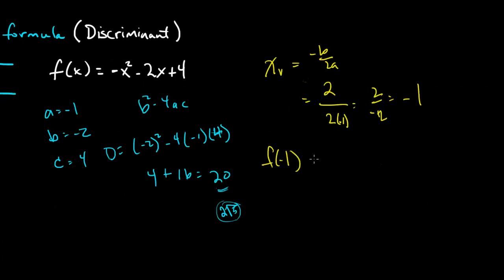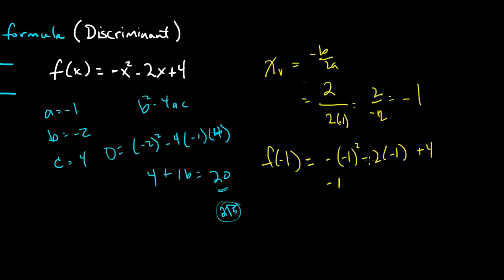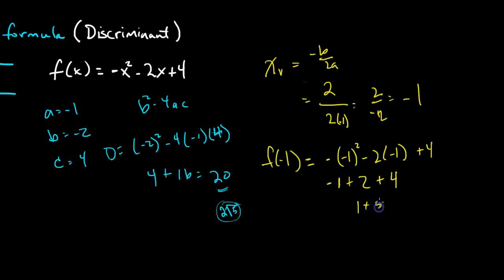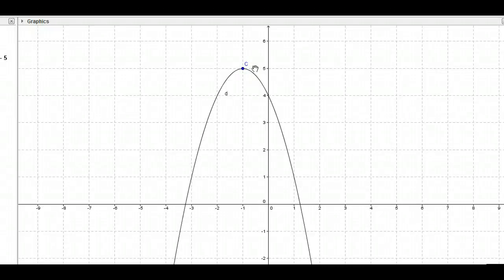So we're looking for f of negative 1. It will be the opposite of negative 1 squared minus 2 times negative 1 plus 4. The opposite of negative 1 squared is the opposite of 1; negative times a negative is positive 2; plus 4 gives us 1 plus 4, or 5. So our vertex is at negative 1 and 5. Here's the graph with the vertex at negative 1, 5, and as predicted, roots just below negative 3 and just above 1 — both irrational. That's using the discriminant and the quadratic formula to find information about our parabola.